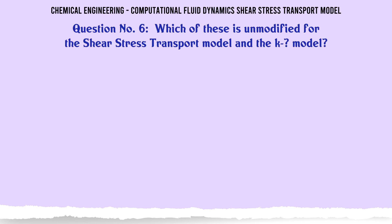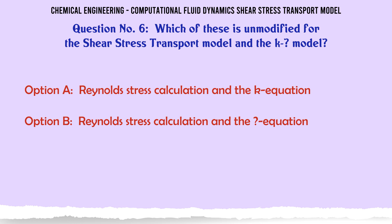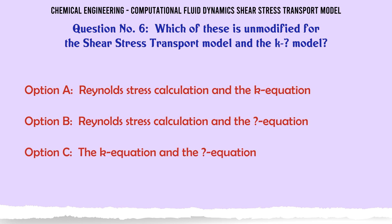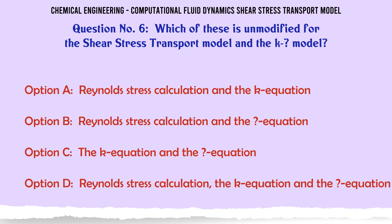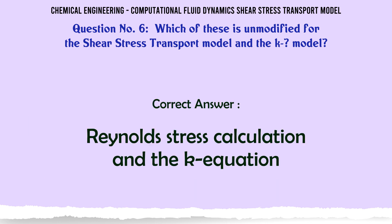Which of these is unmodified for the shear stress transport model and the K model? A) Reynolds' stress calculation and the K equation — B) Reynolds' stress calculation and the ω equation — C) The K equation and the ω equation — D) Reynolds' stress calculation, the K equation, and the ω equation. The correct answer is: Reynolds' stress calculation and the K equation.